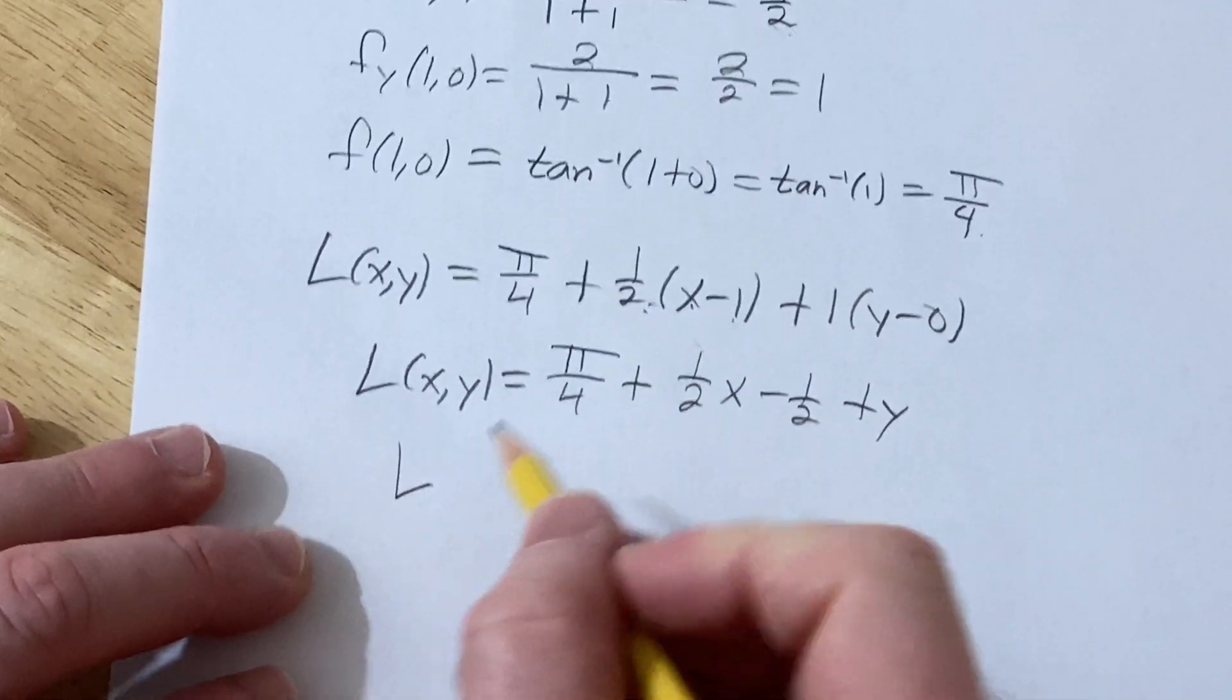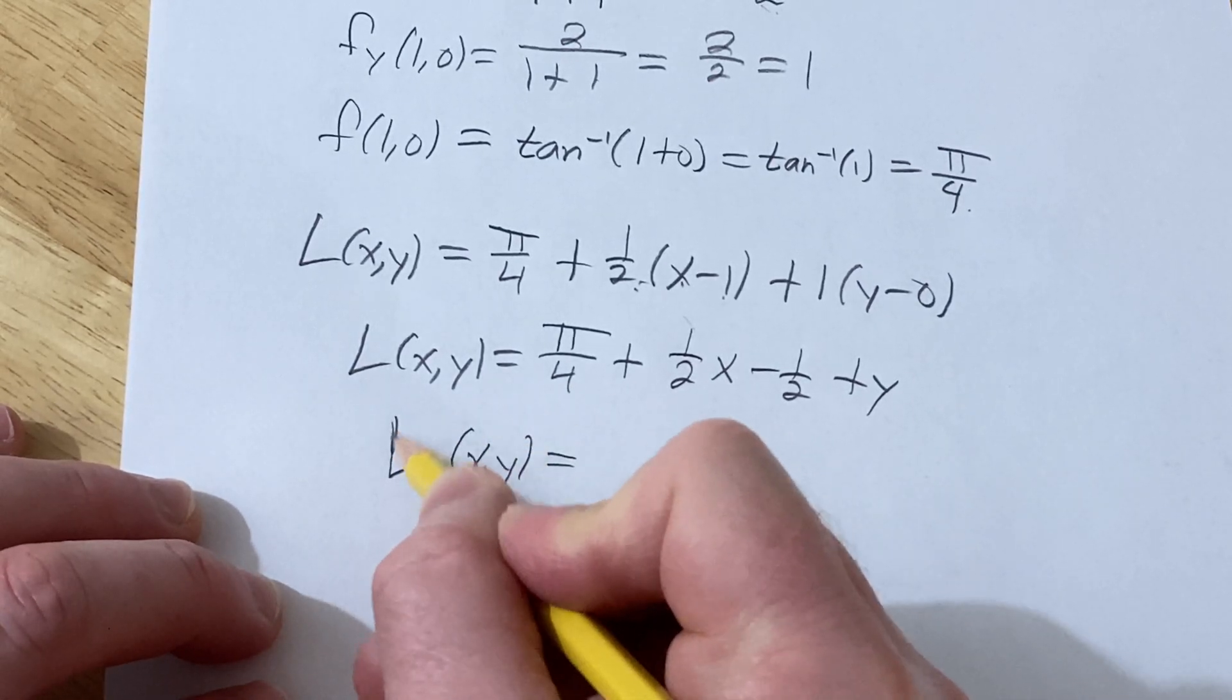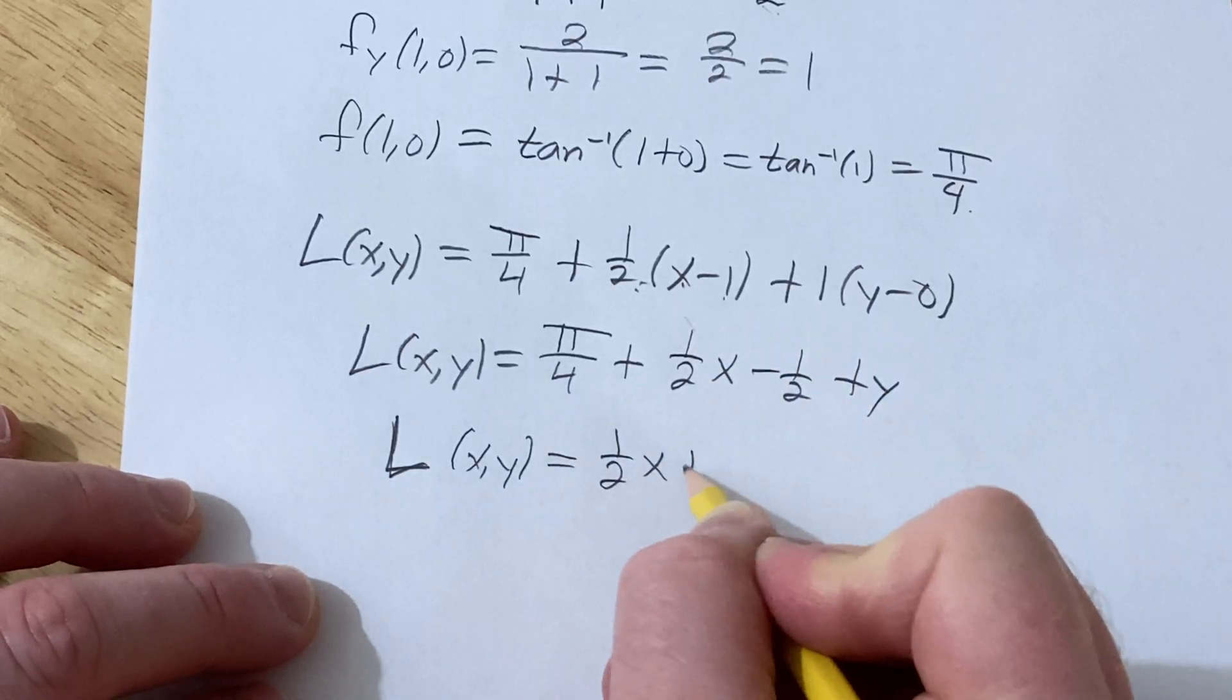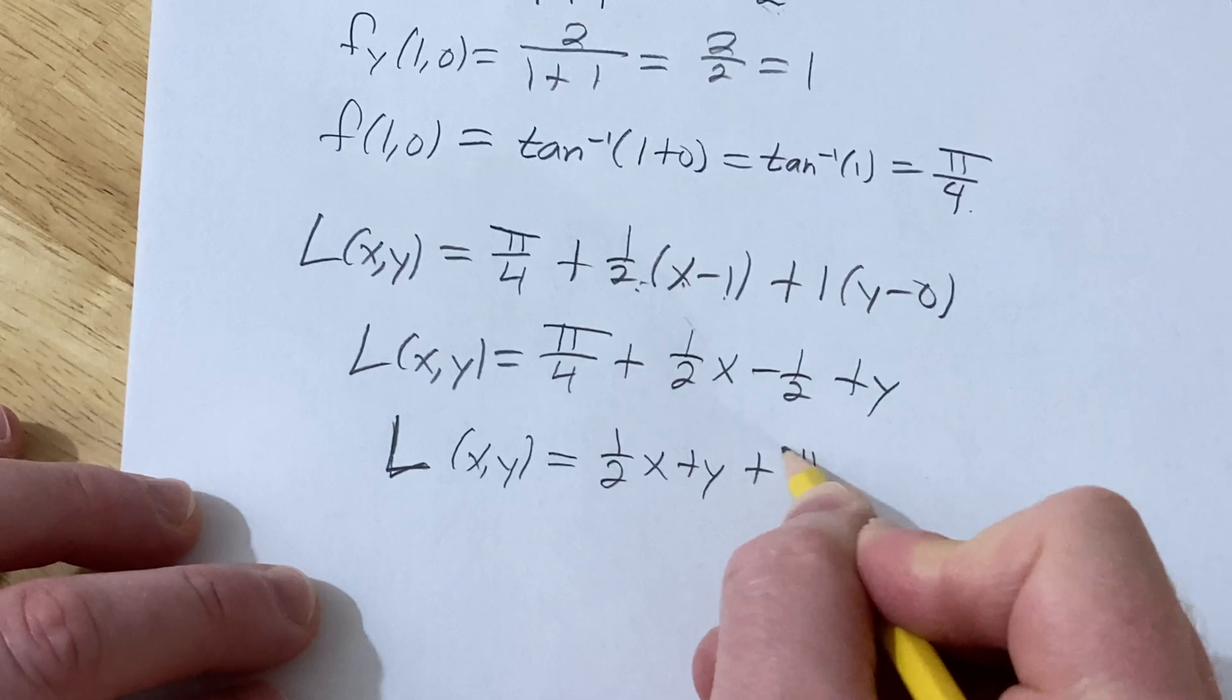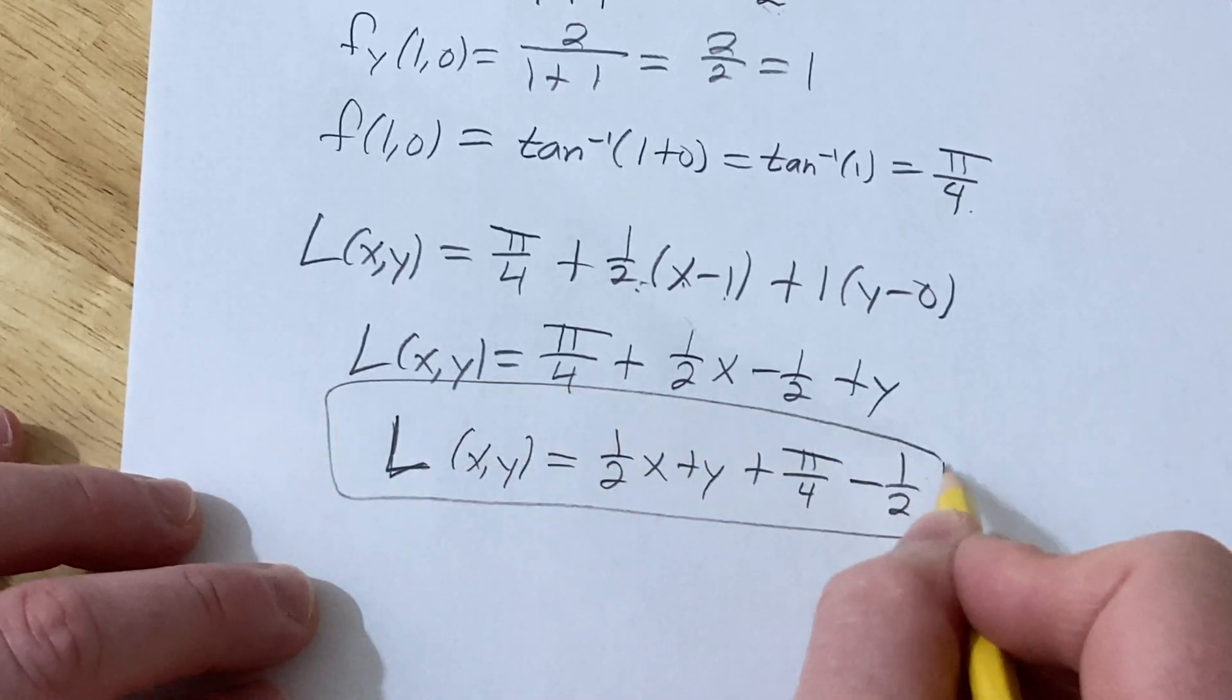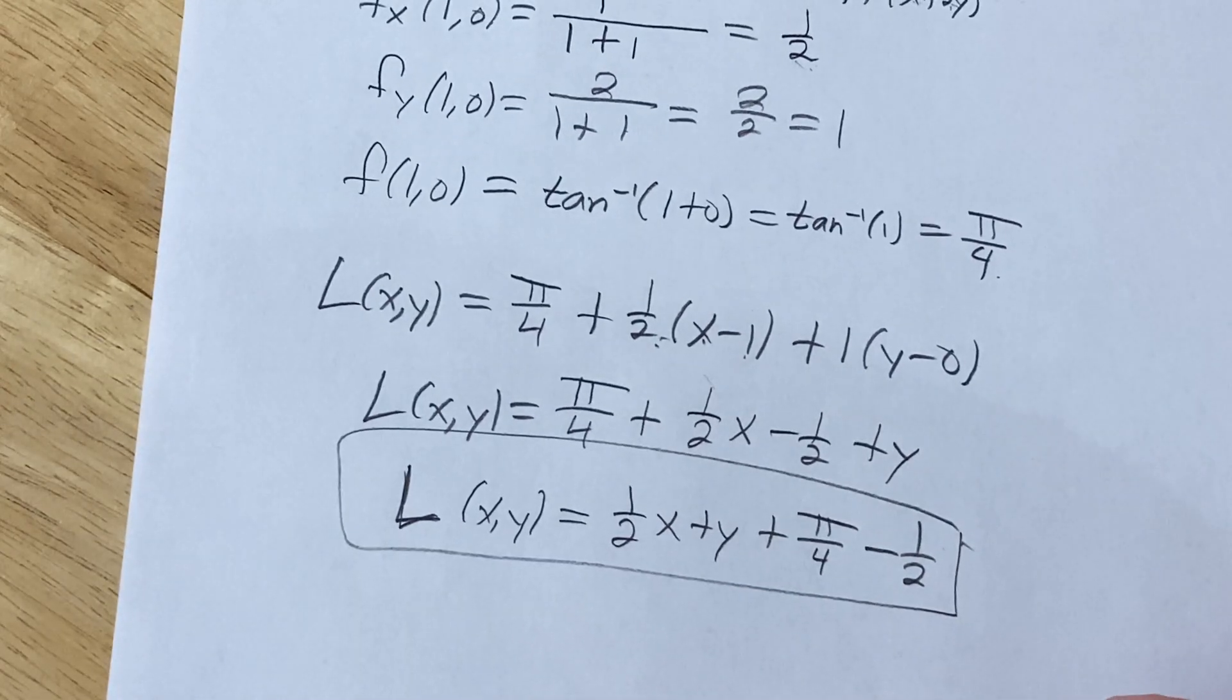So cleaning it up a little bit more, the linearization, or the tangent line approximation, to our function at 1 comma 0 would be 1 half x plus y plus π over 4 minus 1 half. And that would be the final answer. I hope this has been helpful. Good luck.